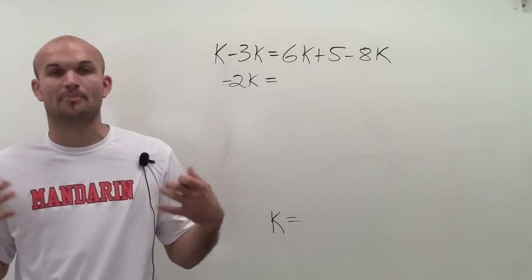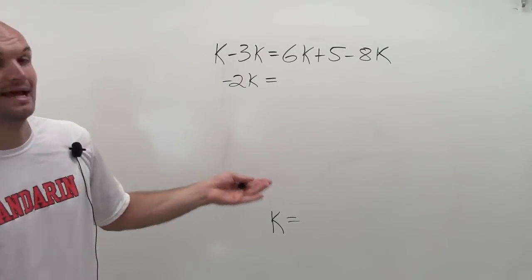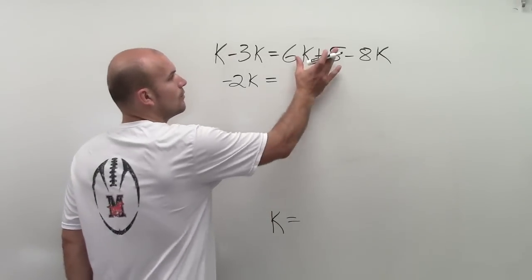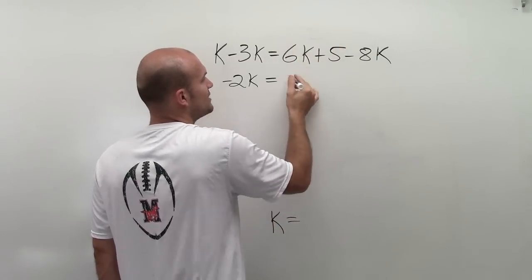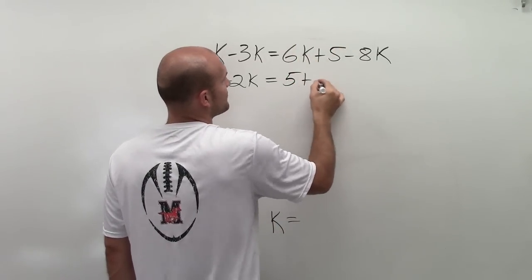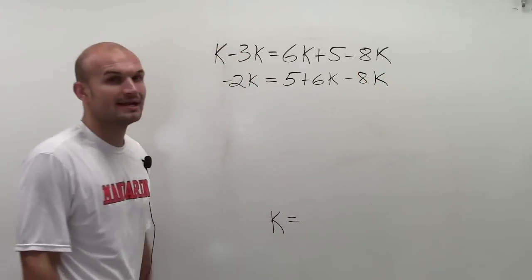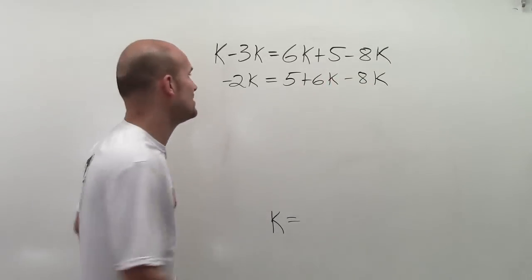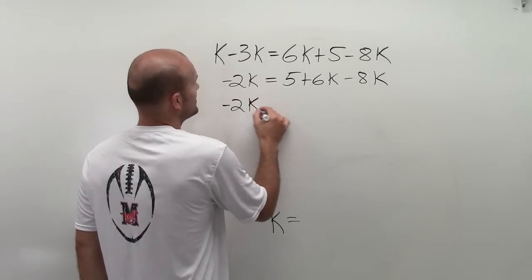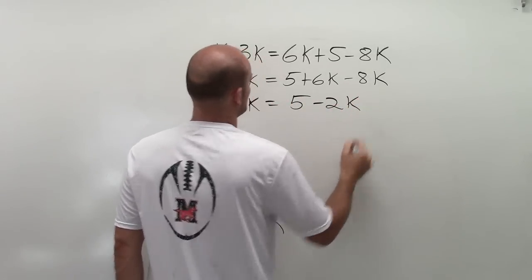It might not be apparent that you can combine the 6k and the negative 8k. One thing you might want to use is the commutative property of addition to rewrite as 5 plus 6k minus 8k. By rewriting, you could see these are like terms. They both have k as a factor. Therefore, I can combine them. So I have negative 2k equals 5 minus 2k.